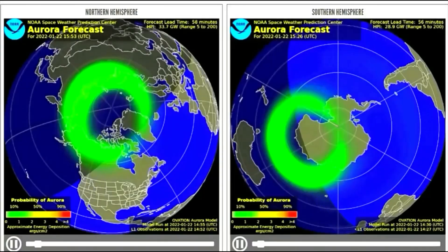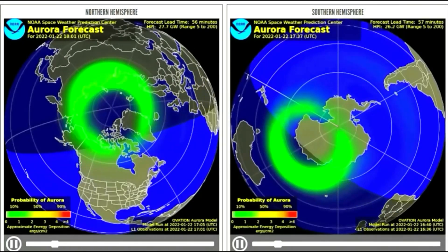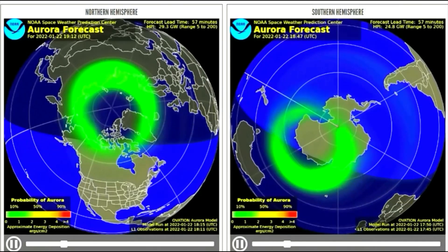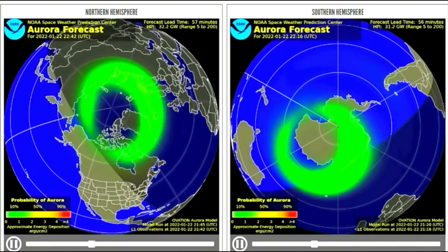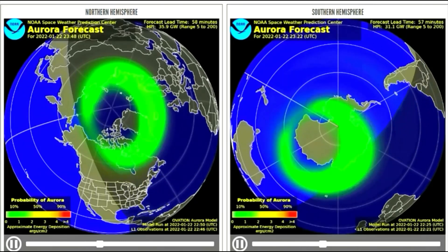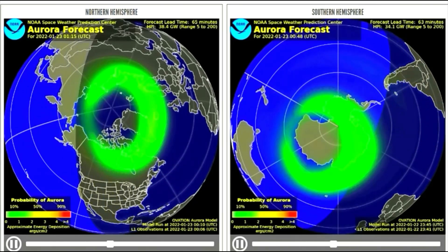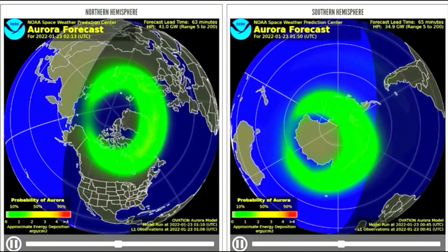This model is showing the northern and southern poles aurora forecast from the 21st to the 23rd. The light green indicates a 10% probability of aurora.